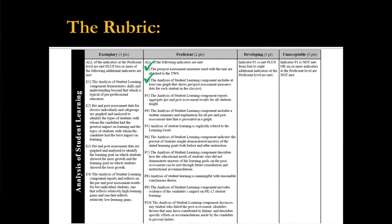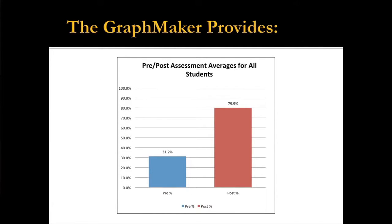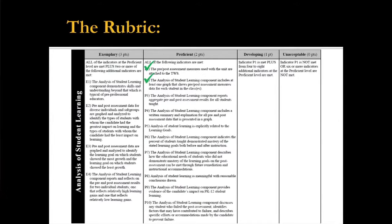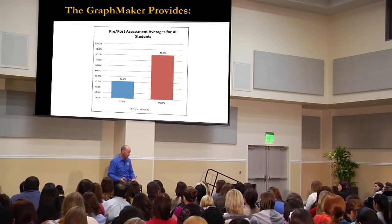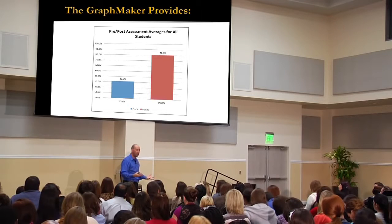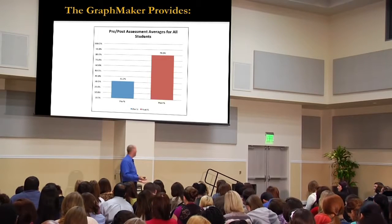I also need to report aggregate pre- and post-assessment results for everybody — aggregate meaning average. I can calculate that and write it in, or the graph maker gives you this. You don't have to use this graph, but you can if you want to. Notice the numbers — I've got my pre- and post- average. Just include that and you're set. Every graph that you include, you do have to talk about. Don't just put a graph and think you're done — explain what that graph says.